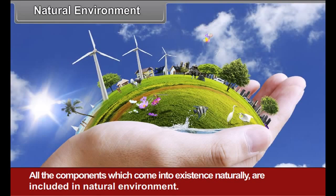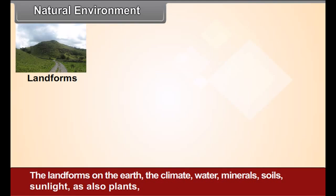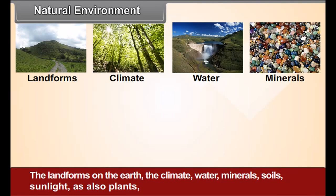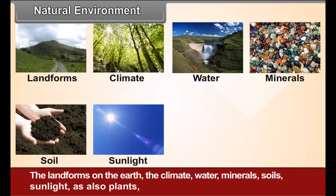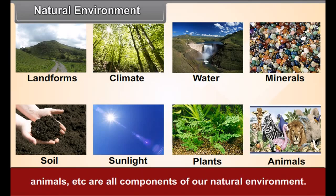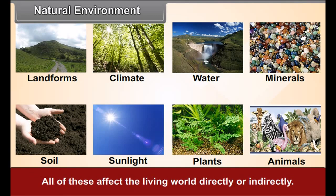Natural Environment: All the components which come into existence naturally are included in the natural environment. The landforms on the earth, the climate, water, minerals, soils, sunlight, as also plants, animals, etc. are all components of our natural environment. All of these affect the living world directly or indirectly.